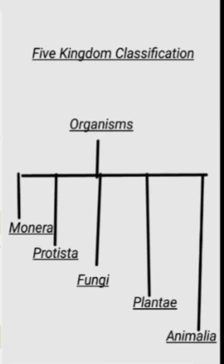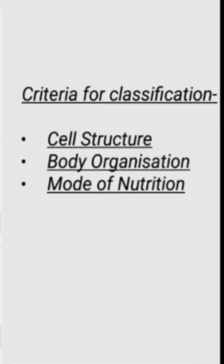Whittaker used three main criteria for his classification: cell structure, body organization, and mode of nutrition. Looking at the classification diagram, at the very bottom is the most primitive organism — kingdom Monera. The diagram is structured like a tree, with the most primitive organisms at the base. The first characteristic he considered was complexity of the cell.